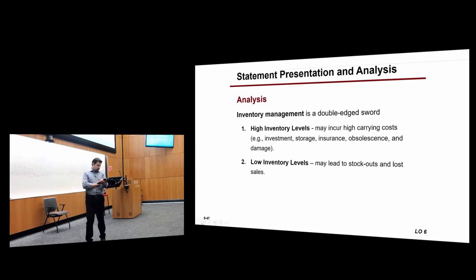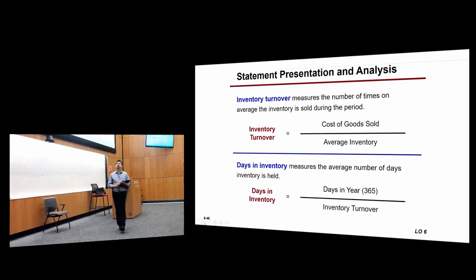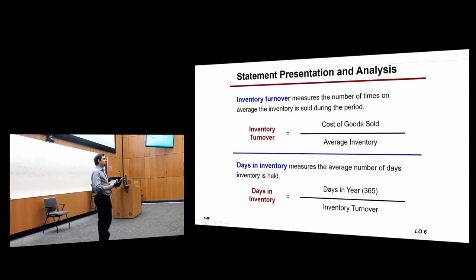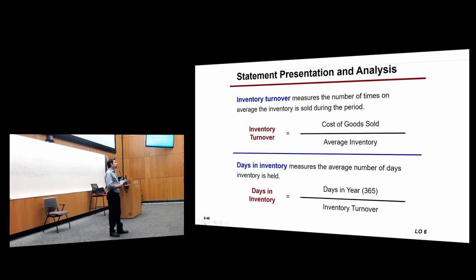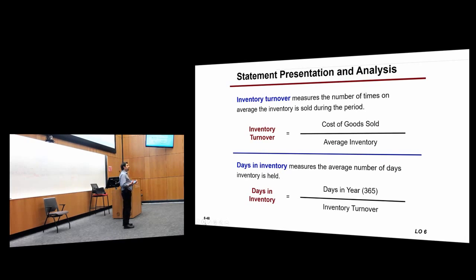Usually, there are two main measures used for analysis of inventory: inventory turnover and days in inventory. Inventory turnover means how many times over the year you sold your inventory. The higher the inventory turnover, usually the more sales you have. To calculate inventory turnover, you divide cost of goods sold by average inventory.